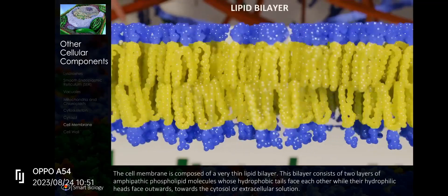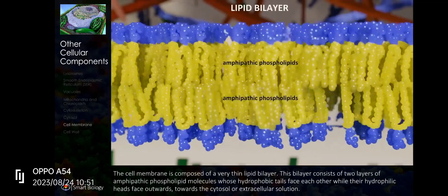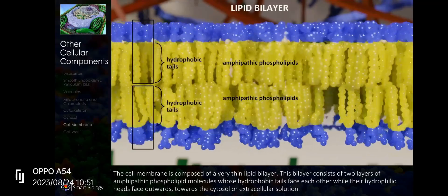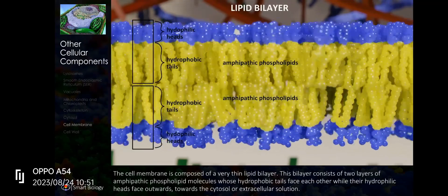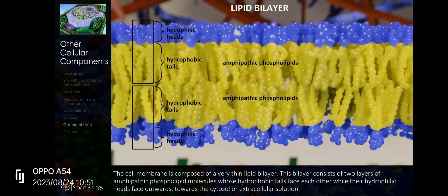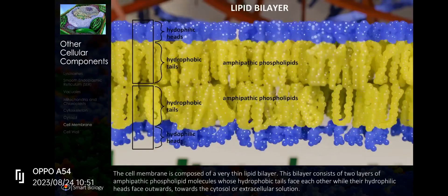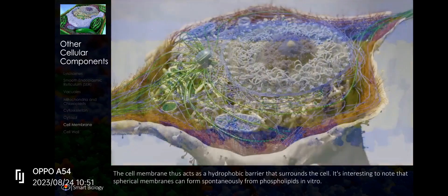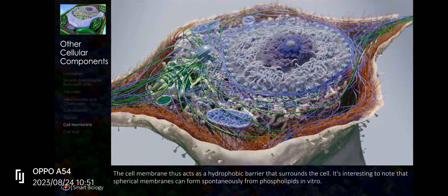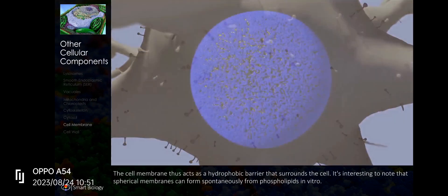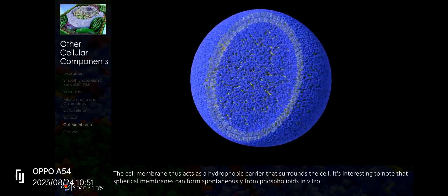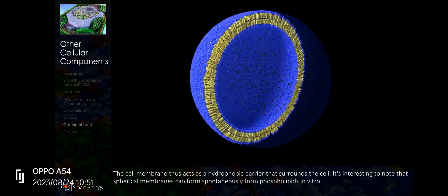The cell membrane consists of two layers of amphipathic phospholipid molecules whose hydrophobic tails face each other while their hydrophilic heads face outwards towards the cytosol or extracellular solution. The cell membrane thus acts as a hydrophobic barrier that surrounds the cell. It's interesting to note that spherical membranes can form spontaneously from phospholipids in vitro.